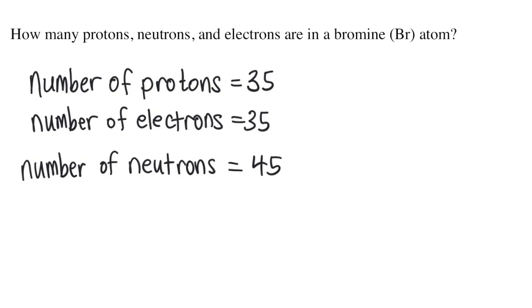So our answer to this homework problem is 35 protons, 35 electrons and 45 neutrons. Thanks for watching. If this video helped you out please give it a like and subscribe to the channel.